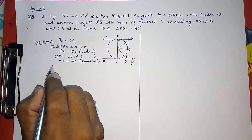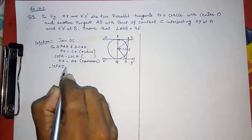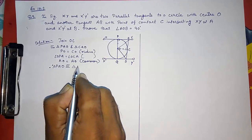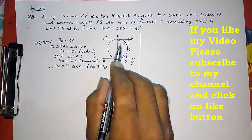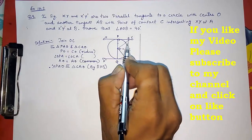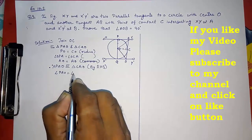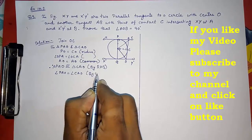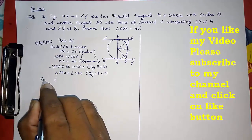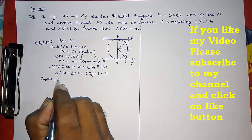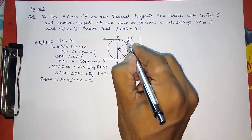By these three conditions — equal radii, right angles, and common side — we can say triangle PAO is congruent to triangle CAO by RHS (Right angle, Hypotenuse, Side). Therefore by CPCT, angle PAO equals angle CAO. We suppose each of these angles equals x.